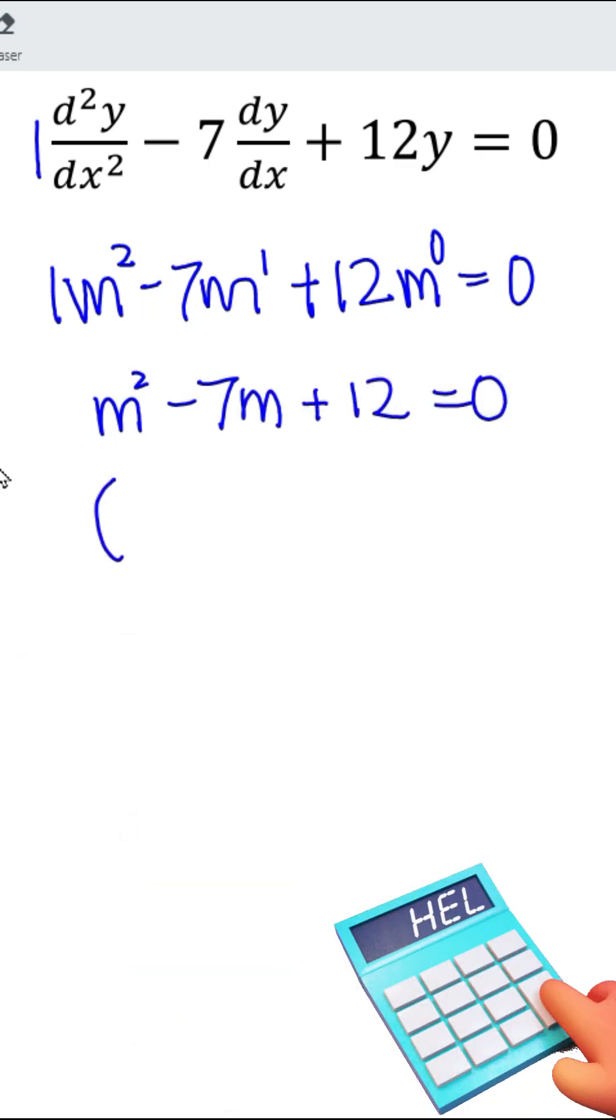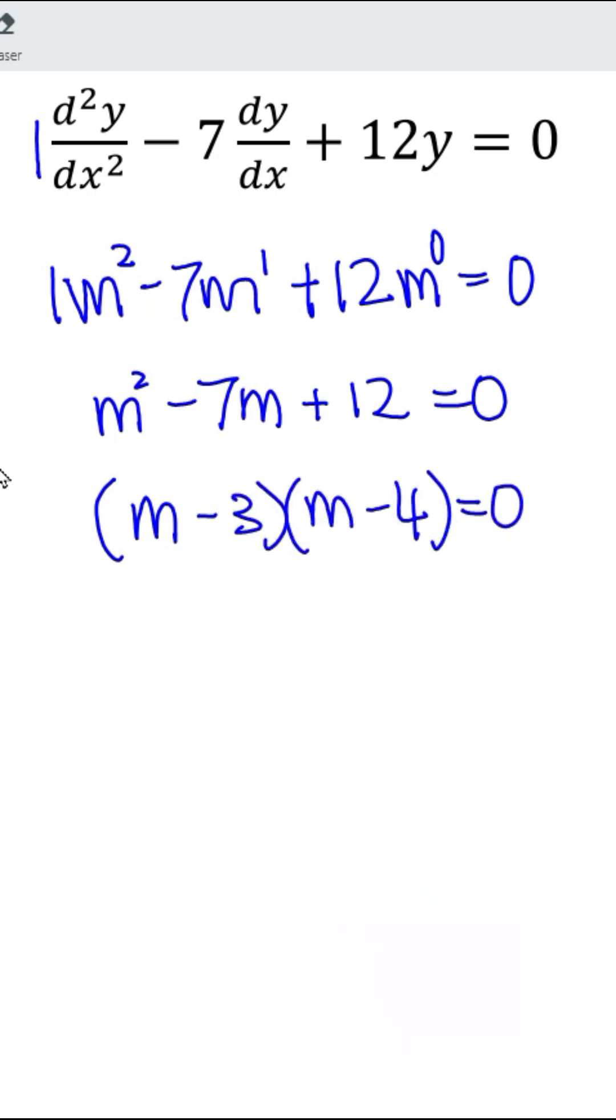Let's factorize. We should obtain m minus 3 multiplied by m minus 4 equal to 0. In other words, m is equal to 3, or m is equal to 4.